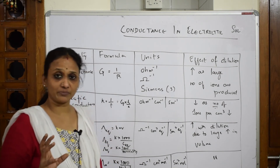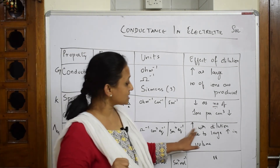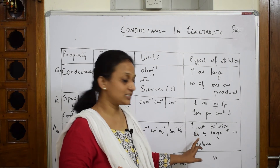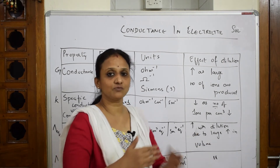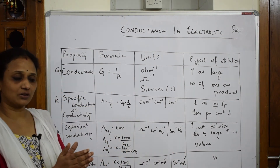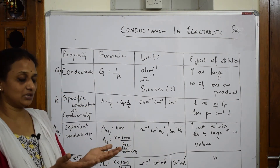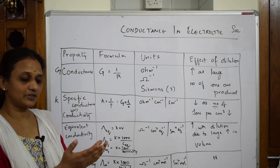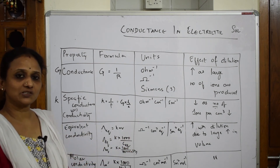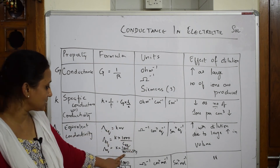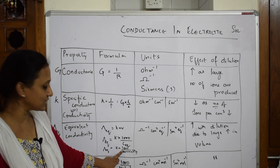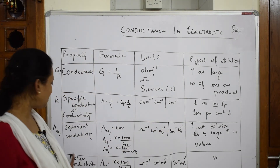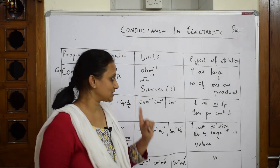Equivalent conductance increases with dilution due to a large increase in volume. When you dilute, the number of ions increases; as the number of ions increases, the volume also increases, so equivalent conductance increases. Similarly, molar conductivity also increases with dilution.